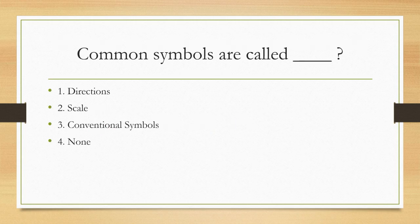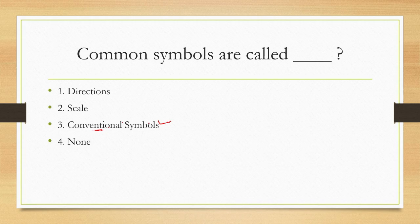Next question: common symbols used on maps are called conventional symbols. In the previous question we discussed what kind of symbols we use, and those symbols are called conventional symbols.